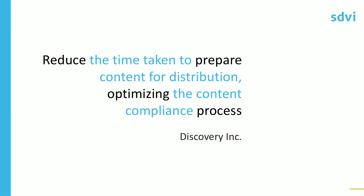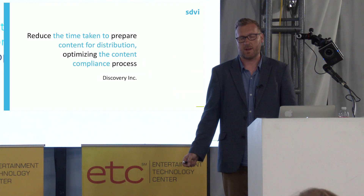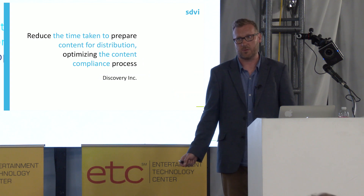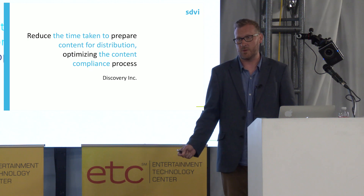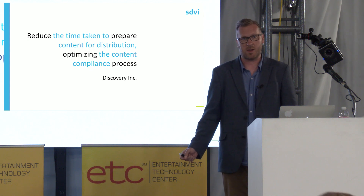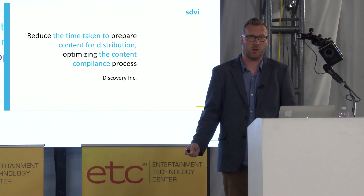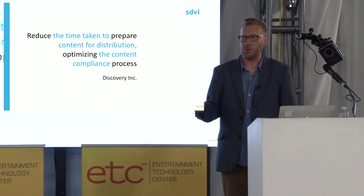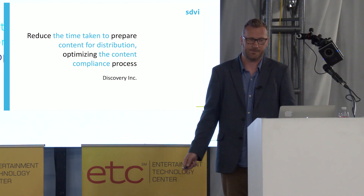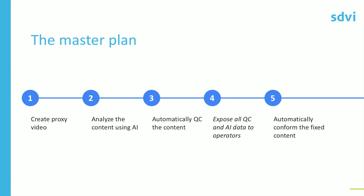So let's talk about what the challenge was. We were working with Discovery, and their challenge to us was to reduce the time taken to prepare content for distribution — optimizing that content compliance process. Discovery operates 400 networks across over 200 different countries. They're producing a lot of content, and every single one of those pieces of content has differences every time it goes to a different location. It may be cut differently. There may be compliance issues, legal issues, or social things that you can't show in some territories. They were really looking for a way to optimize the amount of work that humans had to do as they put content through that factory.